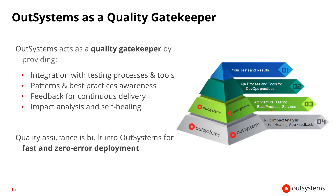There's also integration with testing tools. The approach is to keep OutSystems open, so it's compatible with whatever tools the team typically uses. This way, testing is integrated in the continuous delivery cycle, so there aren't any losses in productivity. All of these quality assurance features are built into OutSystems for fast and zero-error deployment of your applications.